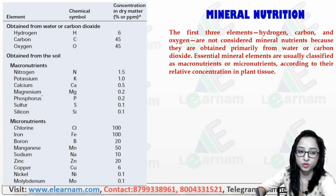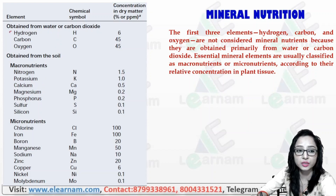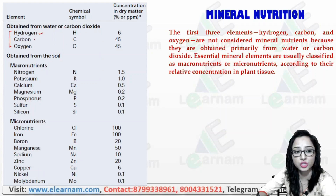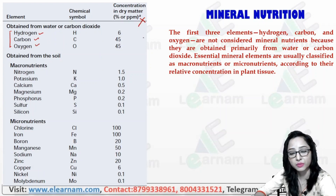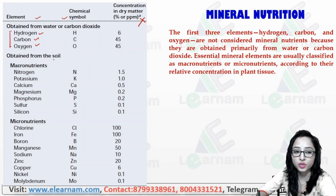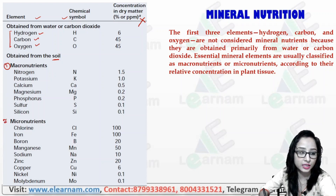You can see all of these elements. These 3 elements — hydrogen, carbon and oxygen — are obtained from water as well as carbon dioxide. The nutrients we obtain from the soil are divided into two groups: first macro, and second micro.